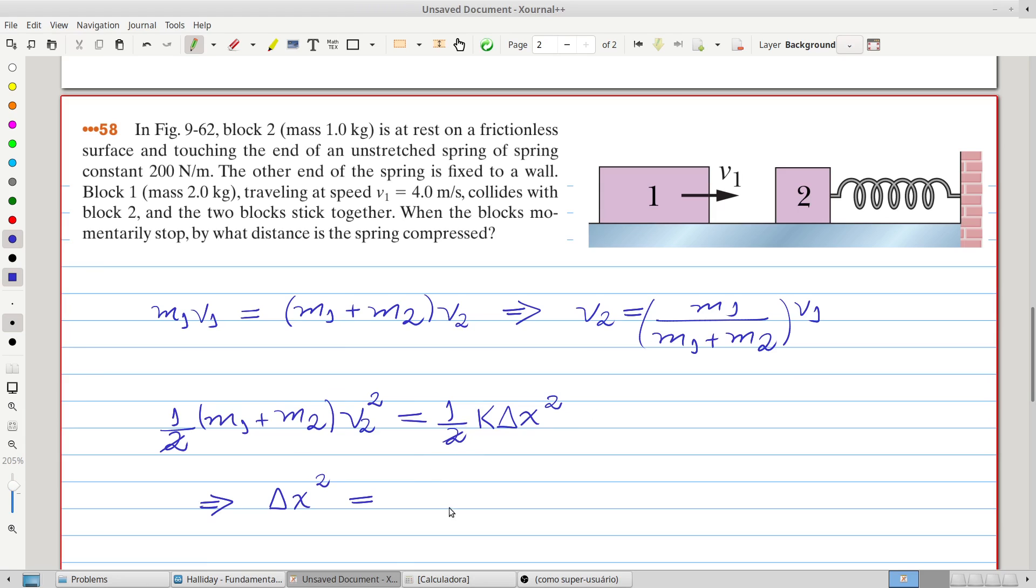so equals M1 plus M2 divided by K, multiplied by the velocity of both blocks after the collision, squared,